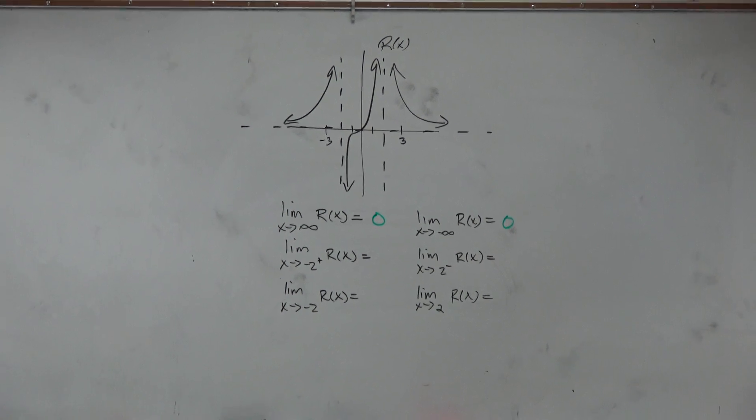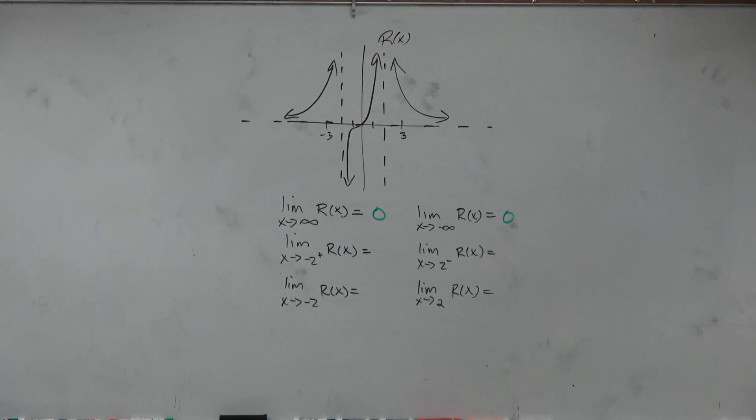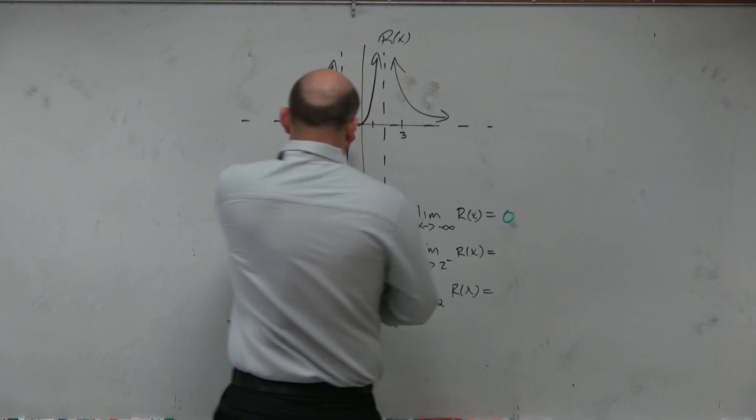The left and right limits with our asymptotes. So again, remember guys, that little plus means as you're approaching negative 2 from the right.